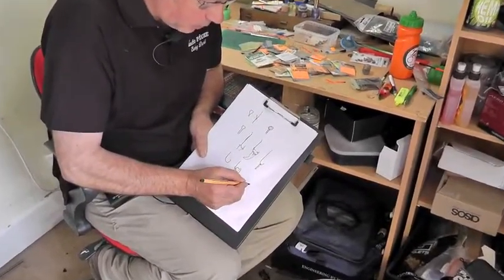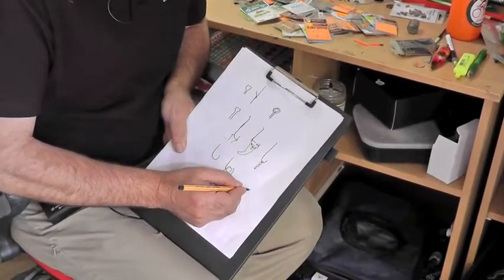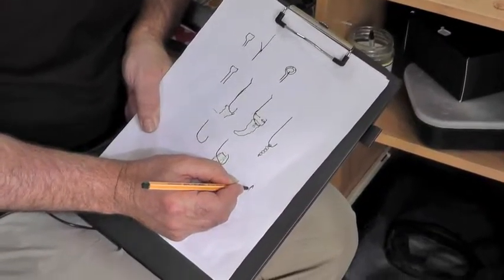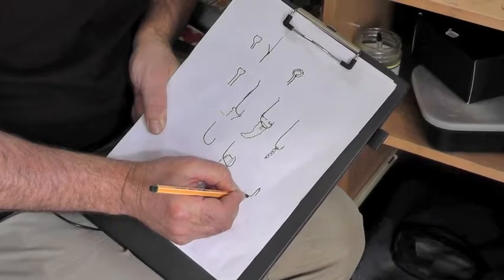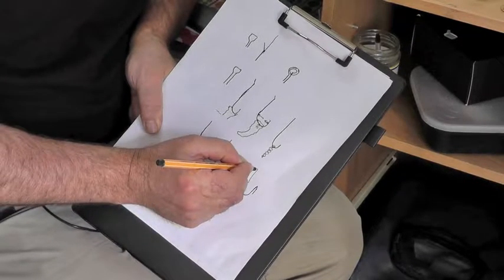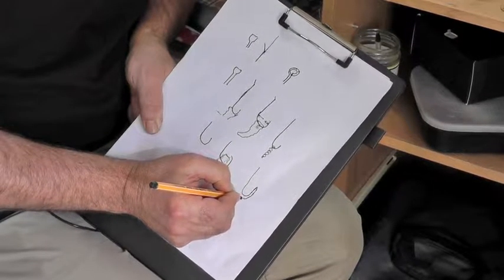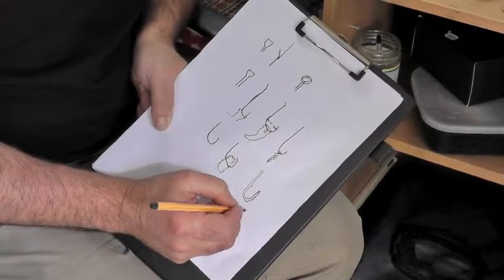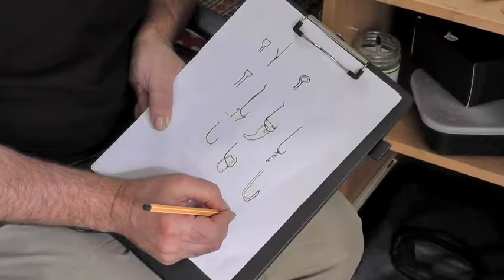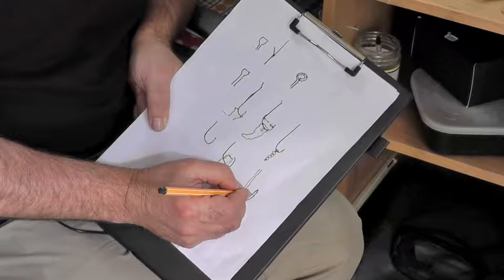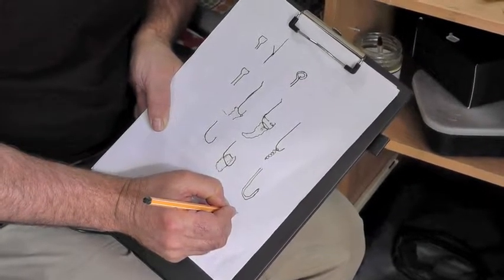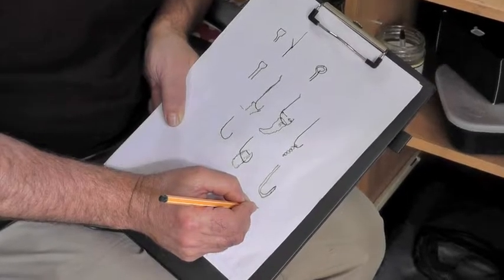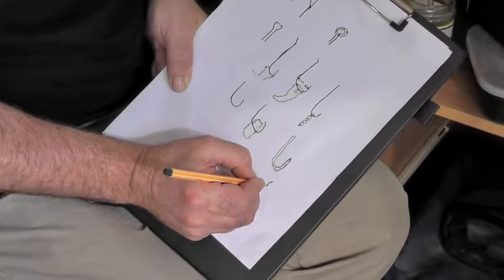Now, on a barbless hook, the wire is just sharpened to a point and chemically etched, and it comes straight down to the bend and up to the front of the hook. That would be a barbless hook. There's no barb on it. On a micro-barbed hook, when the wire is hot, a small notch is made here in the wire to tease or pull some of the wire out, creating what we call a micro-barb.